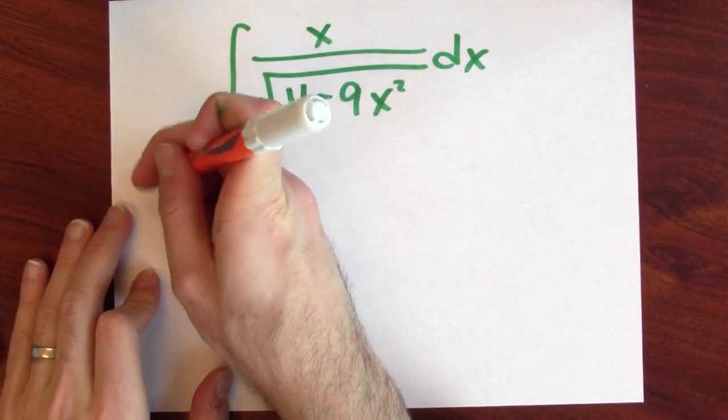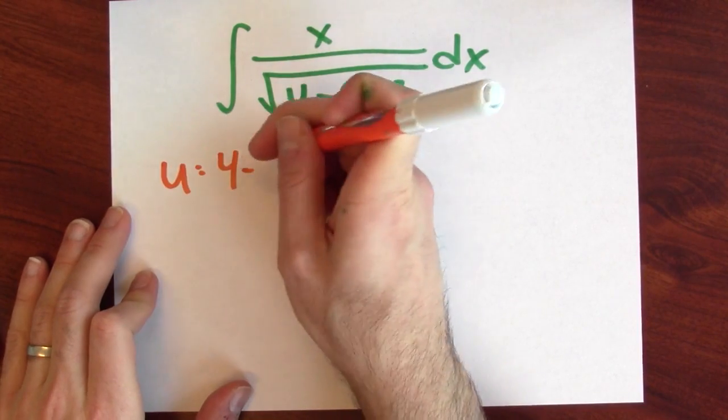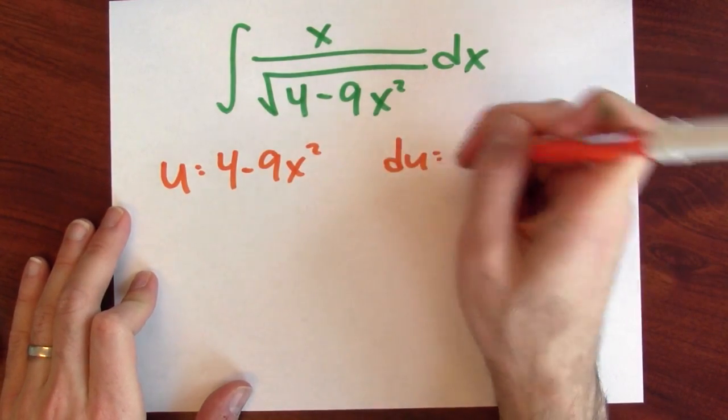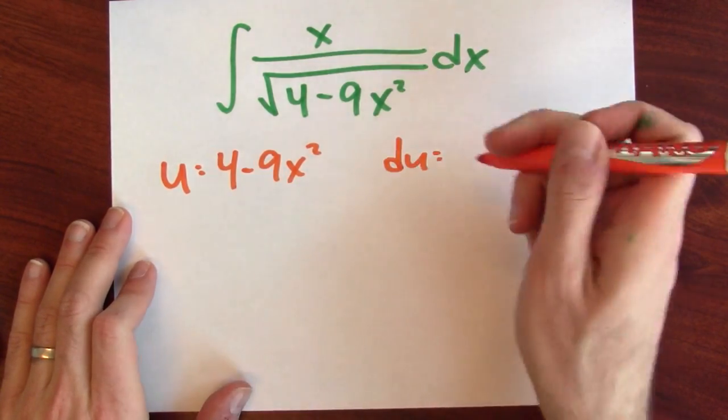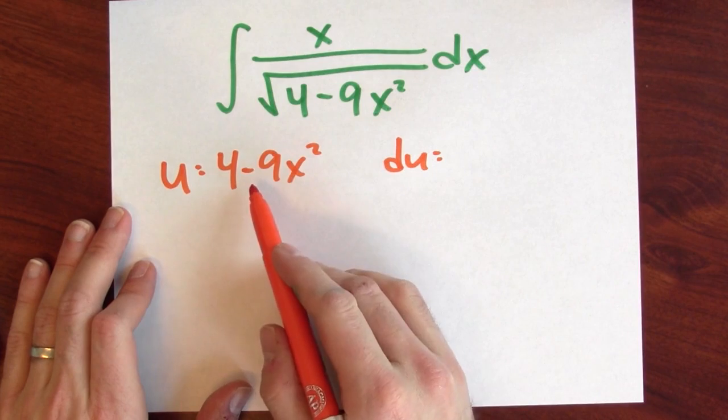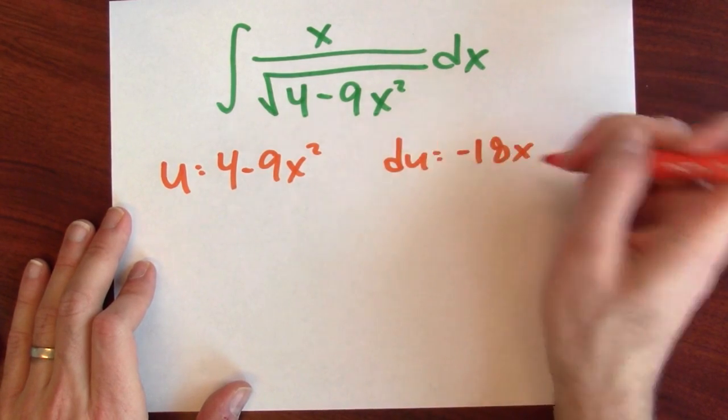So I proposed that u should be 4 minus 9x squared, and then what's du? Well, calculate the differential of u by taking the derivative here, and the derivative of 4 is 0, but the derivative of negative 9x squared is negative 18x.